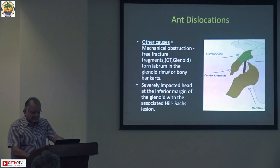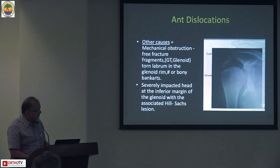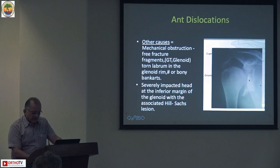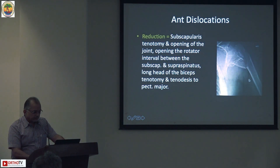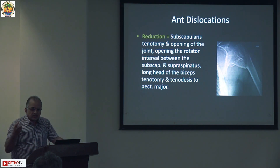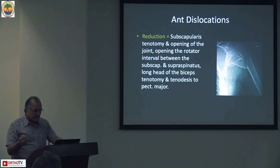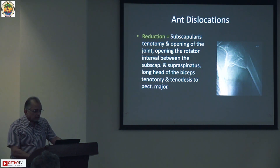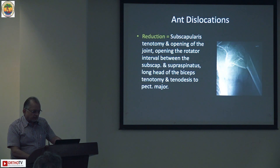The severely impacted head at the inferior margin of the glenoid with the associated Hill-Sachs lesion is a common entity. You can see there is a part of the glenoid not allowing the head to come back into its normal cavity. The head is pulled anteriorly because of the subscapularis, so you have to release that or give counter traction so the head fragment goes back in the glenoid. Subscapularis partial tenotomy and opening the joint by opening the rotator interval between the subscap and supraspinatus is performed.